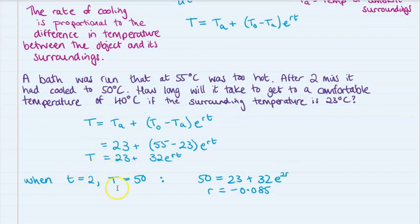Now from there, we put in the information that we know that after two minutes has passed, so when the time gets to two, the temperature will have dropped to 50, we can use that to work out the rate of cooling. So we've put in the 50 here, the time is two here, and then solve our equation so that we have the rate, the r value.